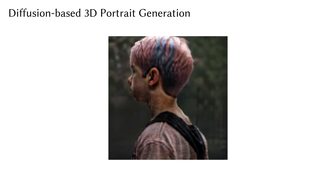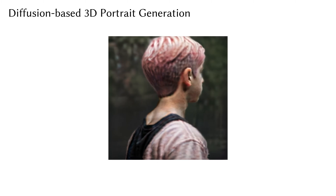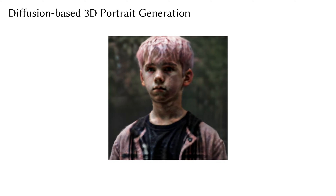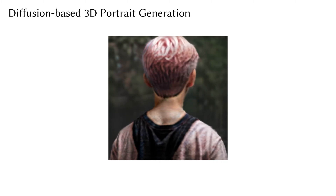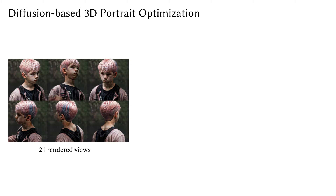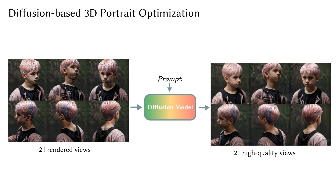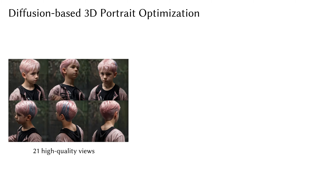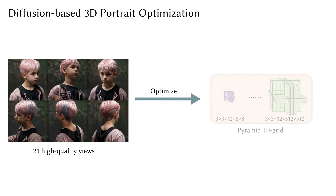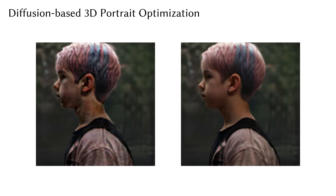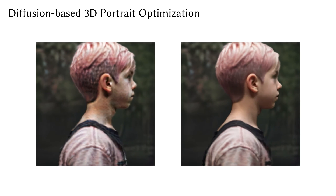This process produces a 3D portrait that aligns with the input prompt. However, it still exhibits unnatural artifacts. To address this, we propose a method to further enhance the quality of the obtained 3D portrait. We first render 21 views using the Pyramid TriGrid optimized by score distillation sampling. Subsequently, we employ the diffusion model to refine these images, yielding high-quality views of the 3D portraits devoid of artifacts. Finally, we utilize the high-quality refined views to optimize the Pyramid TriGrid by penalizing the L2 loss between the refined views and the rendered views. After employing the optimization strategy, the resulting 3D portrait is smoother and appears more natural.